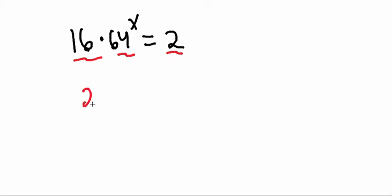Well, 16 I can also write as 2 to the 4th, because remember, 2 times 2 times 2 times 2, that's going to equal 16. So that's 1, 2, 3, 4. That's where 2 to the 4 comes.